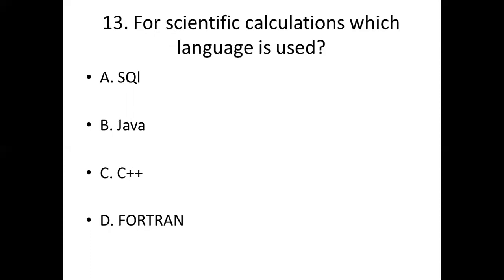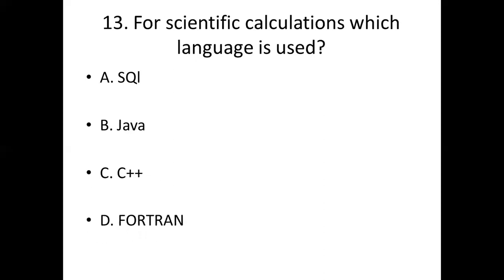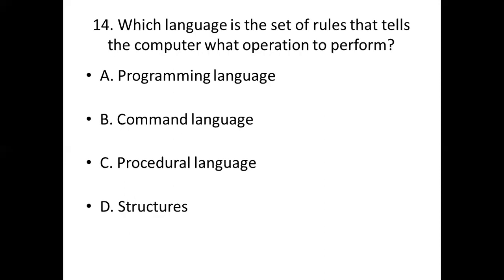Thirteenth bit: For scientific calculations, which language is used? Option A: SQL. Option B: Java. Option C: C++. Option D: Fortran. Answer: Option D, Fortran.